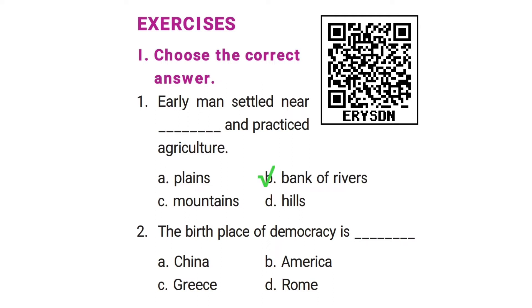The second question is: the birthplace of democracy is blank. Options: China, America, Greece, Rome. The correct answer is option C, Greece.